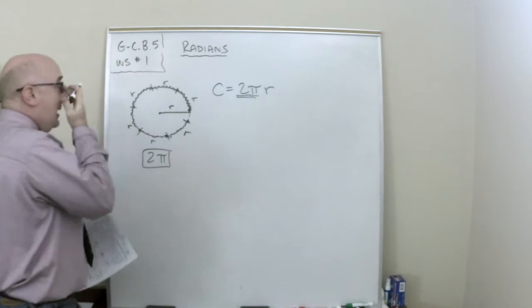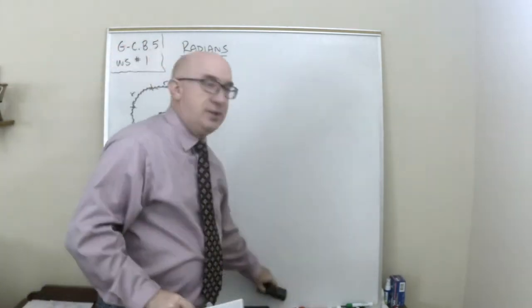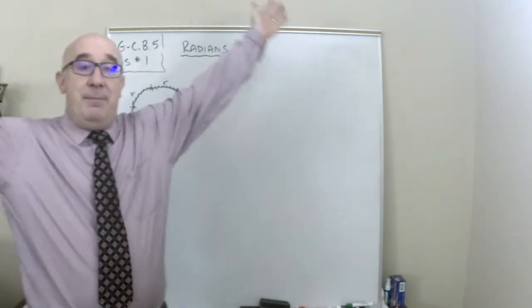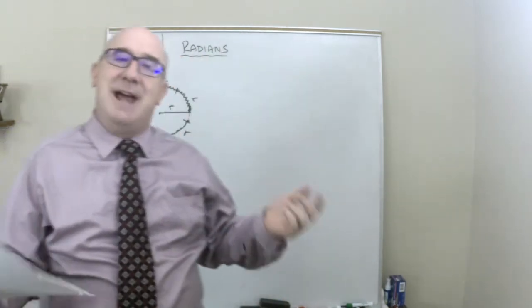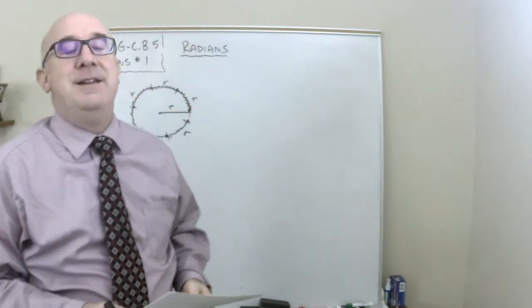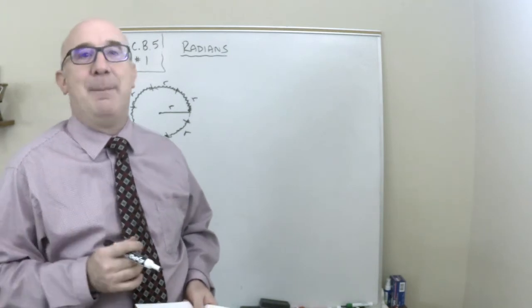So in two pi, now the cool thing is, remember how circles are all similar. Remember how if you have a big one or a small one, and you wrap radii around it, you get the exact same number, two pi every time. Now when things don't change, something important happens.